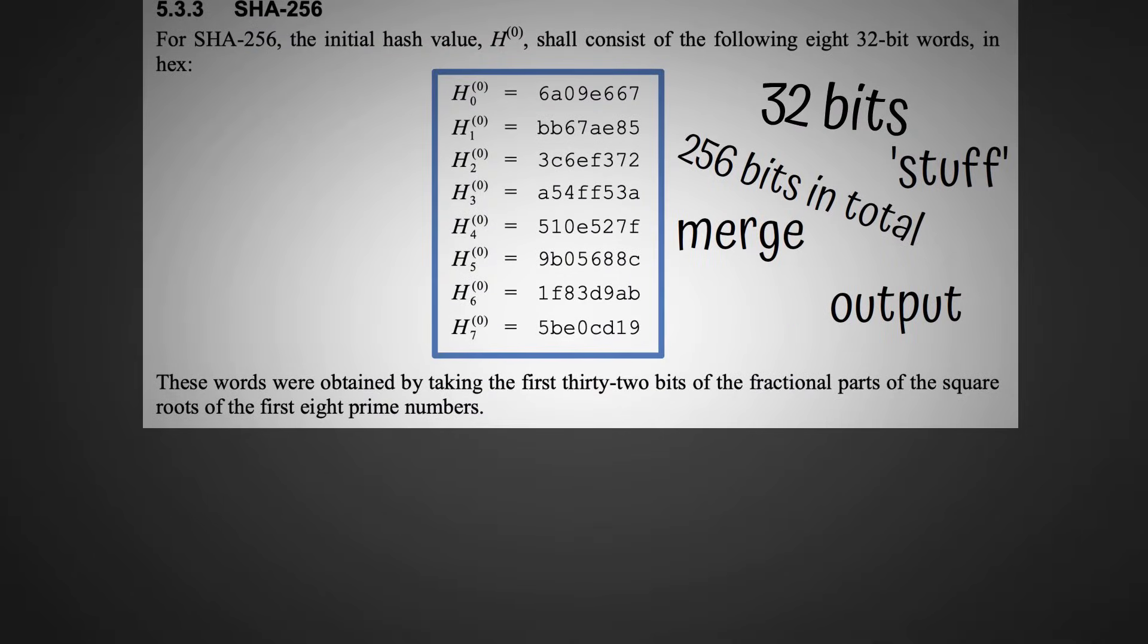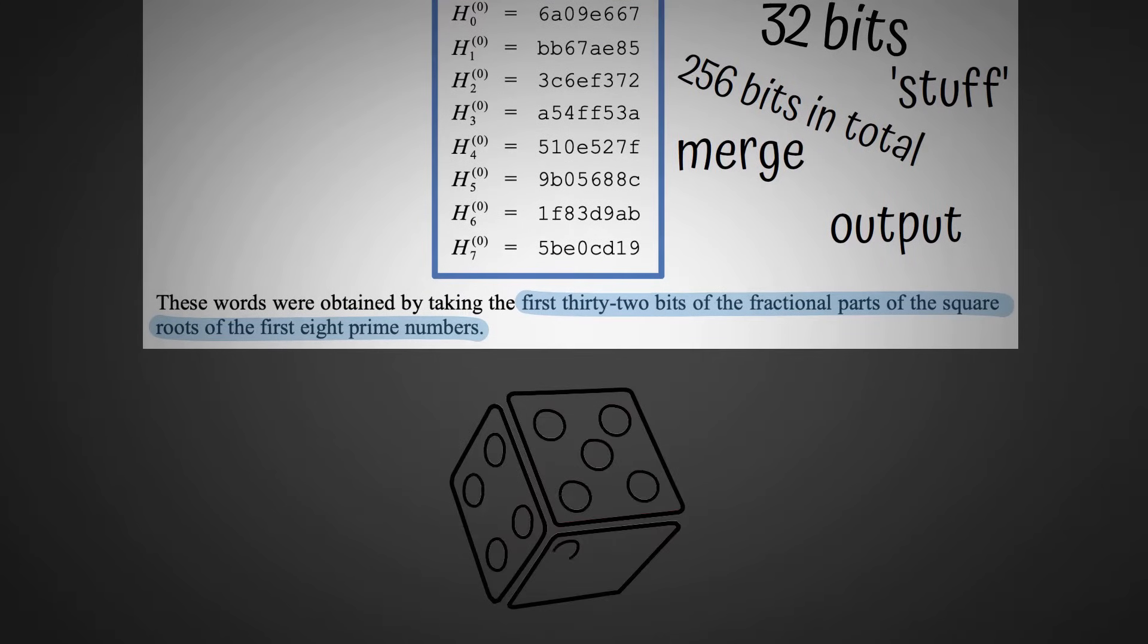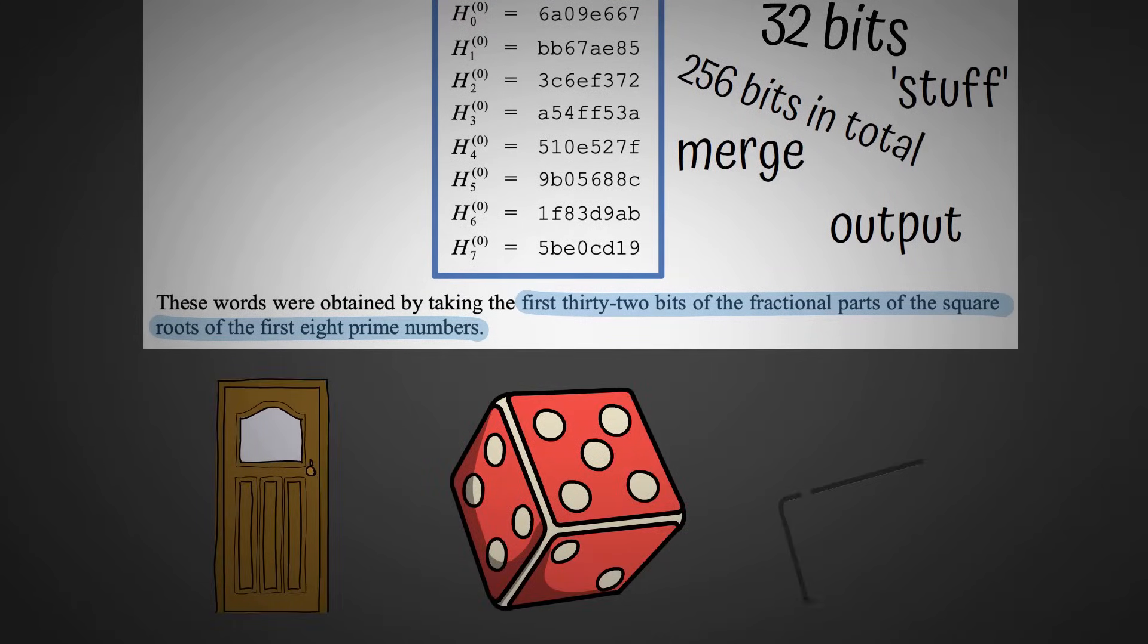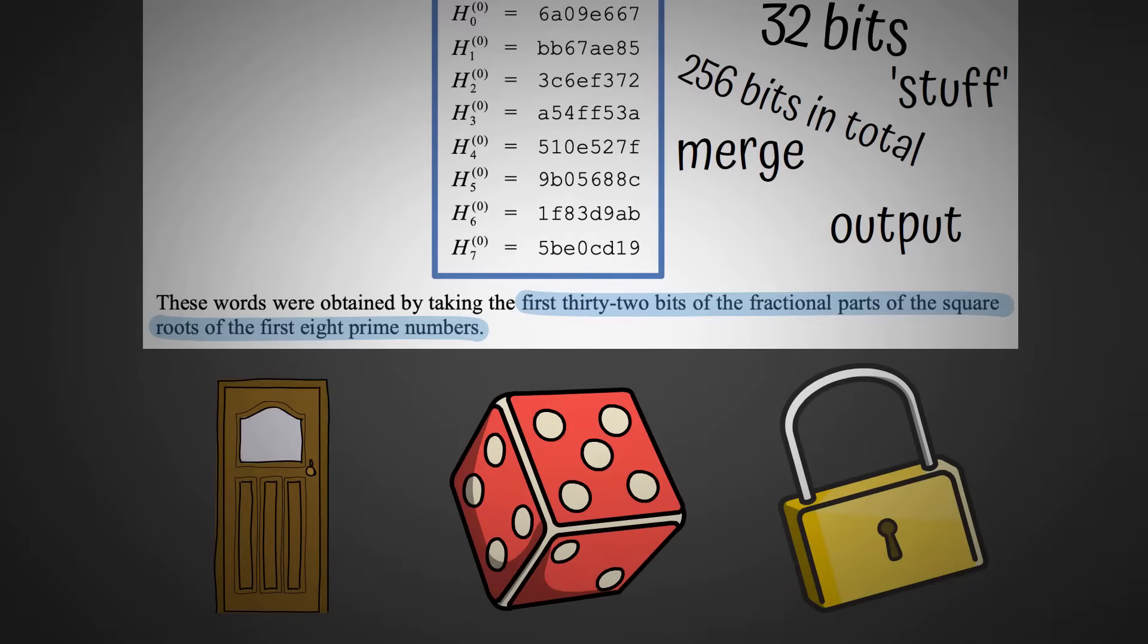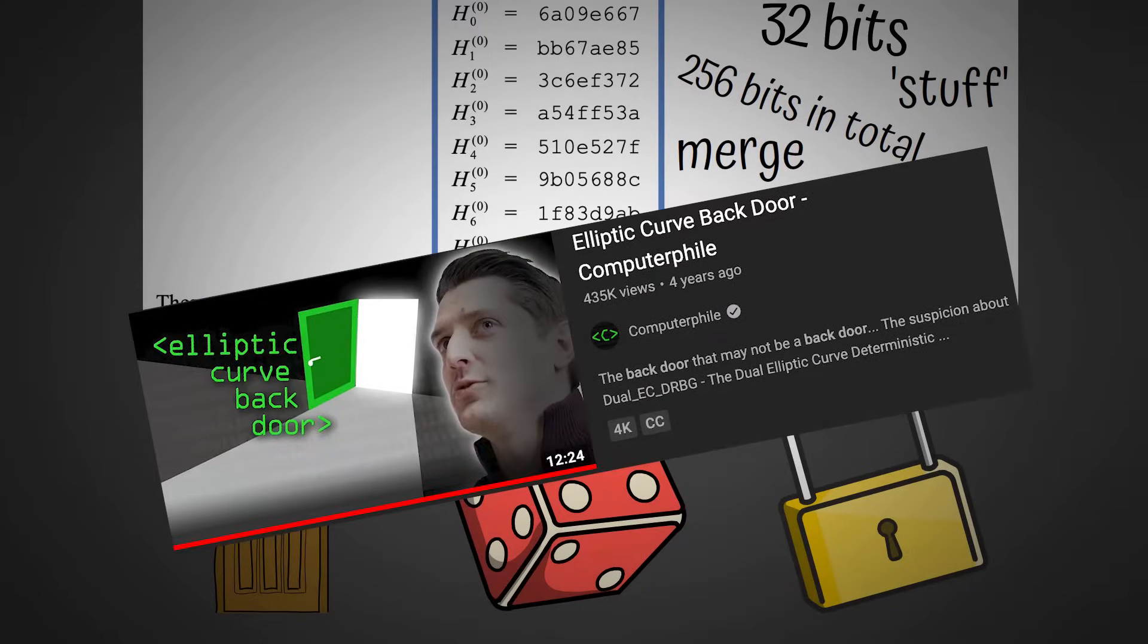So where do these numbers come from? We take the first 32 bits of the fractional parts of the square roots of the first 8 prime numbers. You may be thinking, why on earth are we doing this? This is just to ensure that these are indeed random and there are no backdoors into this algorithm. If you want to know what I mean by backdoor, here is a video that I highly recommend watching.